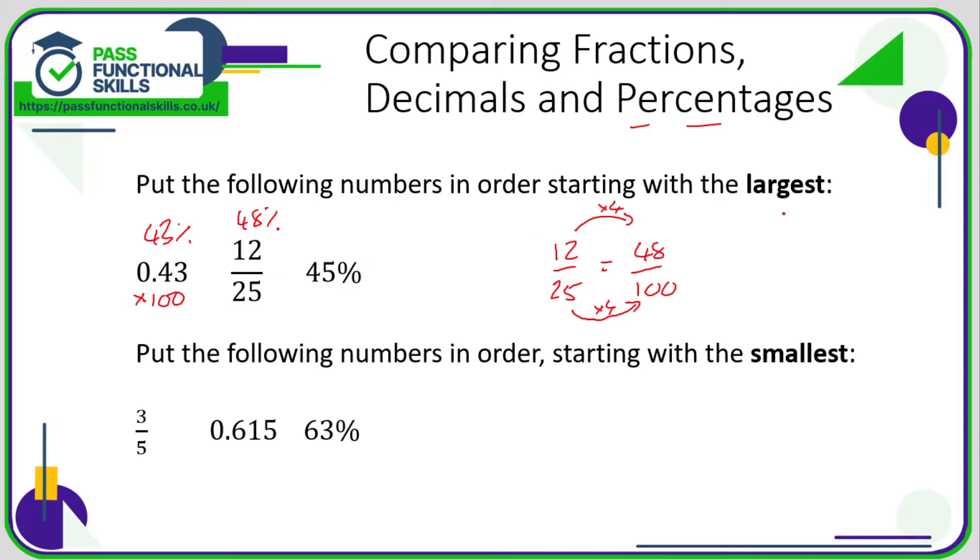So the largest is 48 percent, which is 12/25ths, that's the largest of the three, followed by 45 percent and then followed by 0.43.